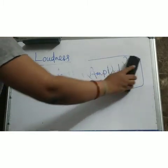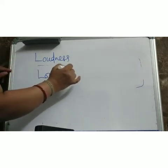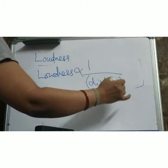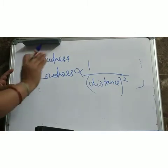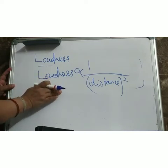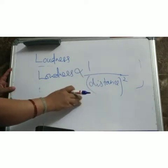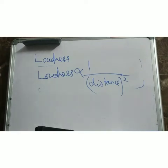Another important factor that loudness depends on is distance from the source — that is, the distance between the source and the listener. Loudness is inversely proportional to the square of the distance. Suppose I am calling you: if you are nearby, you can hear; if you are 1 kilometer away, it is very difficult to hear. So if distance increases, loudness decreases.